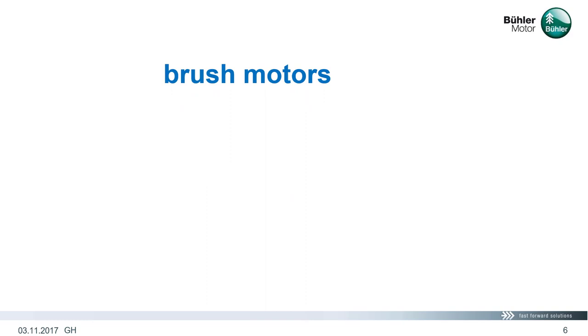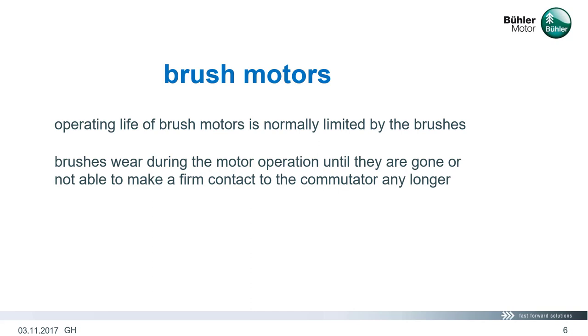Looking at brush motors now. Operating life of brush commutated motors is normally determined by the brush wear. Only in cases of excessive bearing load, the bearing may be the limiting factor. In this case, also brushless motors would not be of advantage. Brushes wear during the motor operation until they are gone completely or are not able to make a firm contact to the commutator any longer. Total brush wear is a combination of mechanical wear and electrical wear. The mechanical wear is significantly lower than the electrical wear.